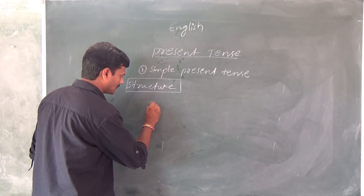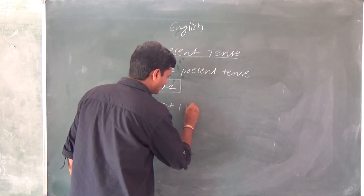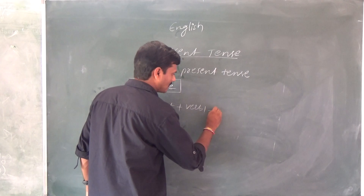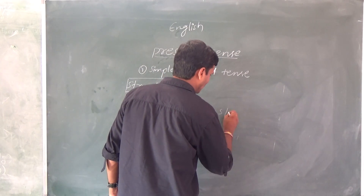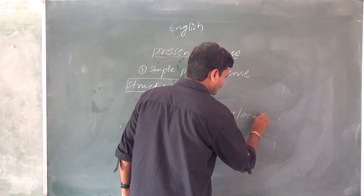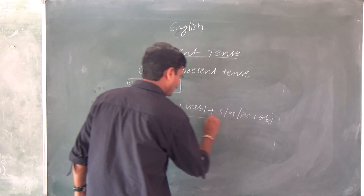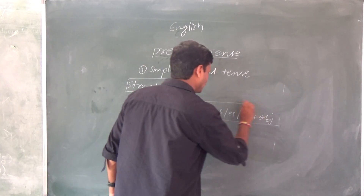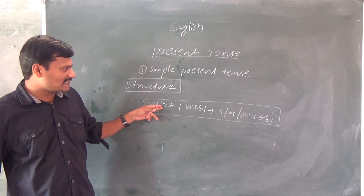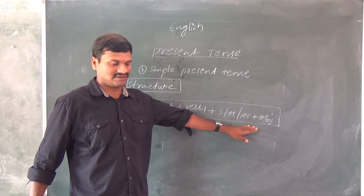The structure is: Subject + Verb 1 + s/es/ies + Object. This is the structure of simple present tense. Repeat: Subject plus verb one plus s, es, or ies, plus object.